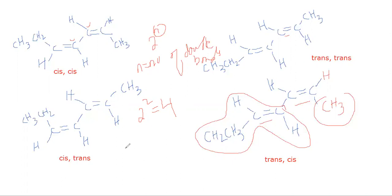One cis-cis, one trans-trans, one cis-trans, and one trans-cis. In this case, if you have 3 double bonds, then 2 raised to the power 3, you have 8 stereoisomers. And so on.